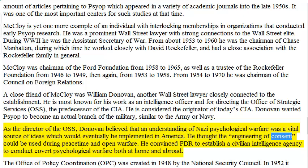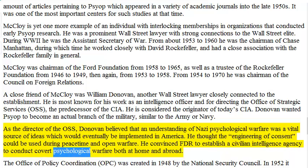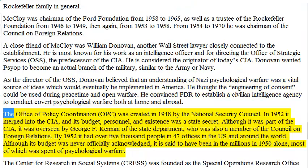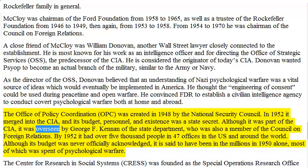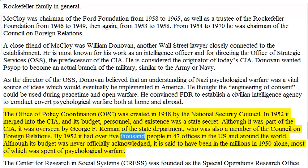As the director of the OSS, Donovan believed that an understanding of Nazi psychological warfare was a vital source of ideas which would eventually be implemented in America. He thought the engineering of consent could be used during peacetime and open warfare. He convinced FDR to establish a civilian intelligence agency to conduct covert psychological warfare both at home and abroad. The Office of Policy Coordination (OPC) was created in 1948 by the National Security Council. In 1952 it merged into the CIA, and its budget, personnel, and existence was a state secret. Although it was part of the CIA, it was overseen by George F. Kennan of the State Department, who was also a member of the Council on Foreign Relations. By 1952 it had over 5,000 people in 47 offices in the United States and around the world.